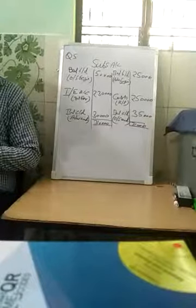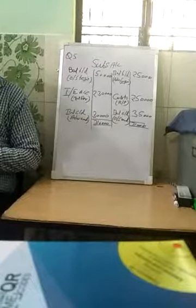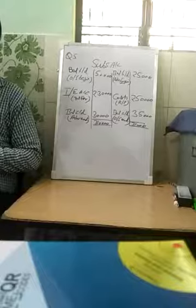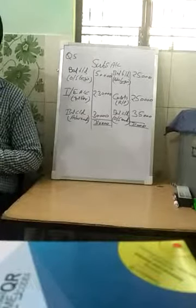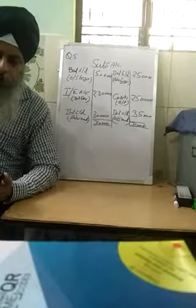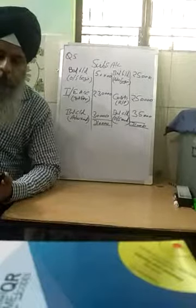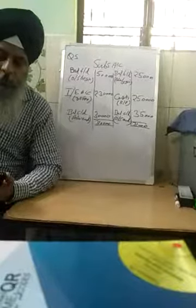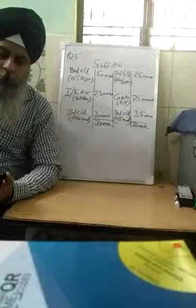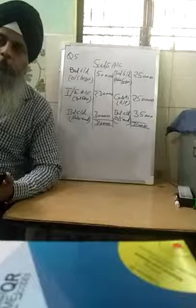Now we will start question number 5 from NCERT page number 22. As per the receipt payment account for the year ended 31st March 2017, the subscription received was Rs. 2,50,000. Additional information: subscription outstanding on 1st April 2016 is Rs. 50,000.